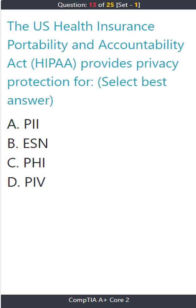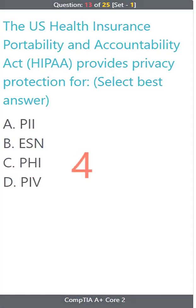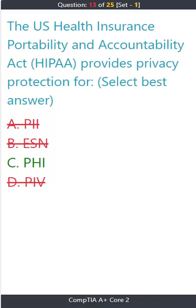Question 13: The U.S. Health Insurance Portability and Accountability Act (HIPAA) provides privacy protection for — select the best answer: A) PII. B) SSN. C) PHI. D) PIB. The correct answer is C: PHI.